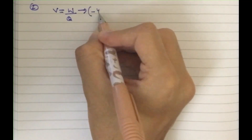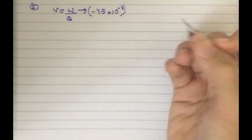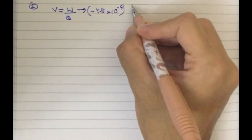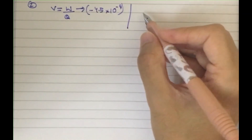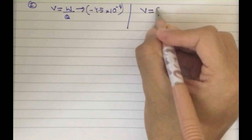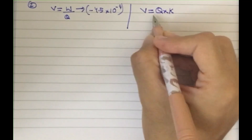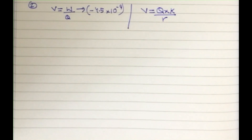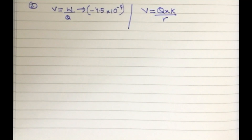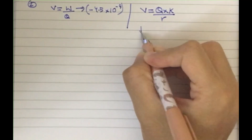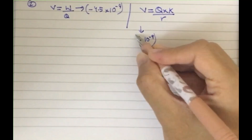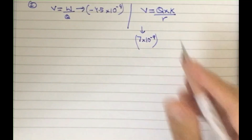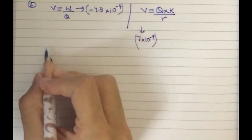We have to find the work done on the charge of negative 4.5 times 10 to the power minus 9. We don't have the electric potential value directly, so we are going to find it using this formula — the electric potential due to a point charge. This point charge has a value of 7 times 10 raised to power minus 9.